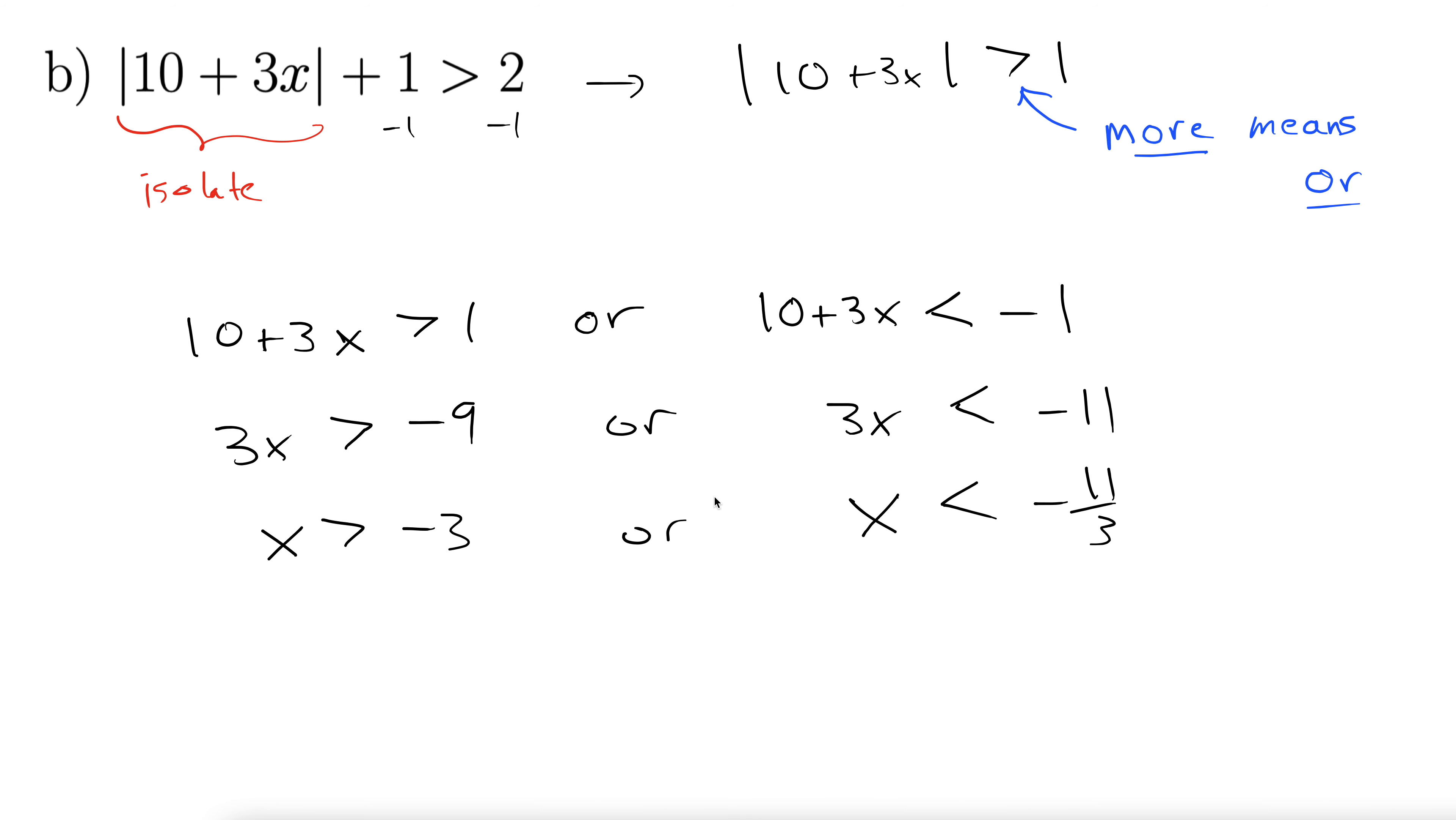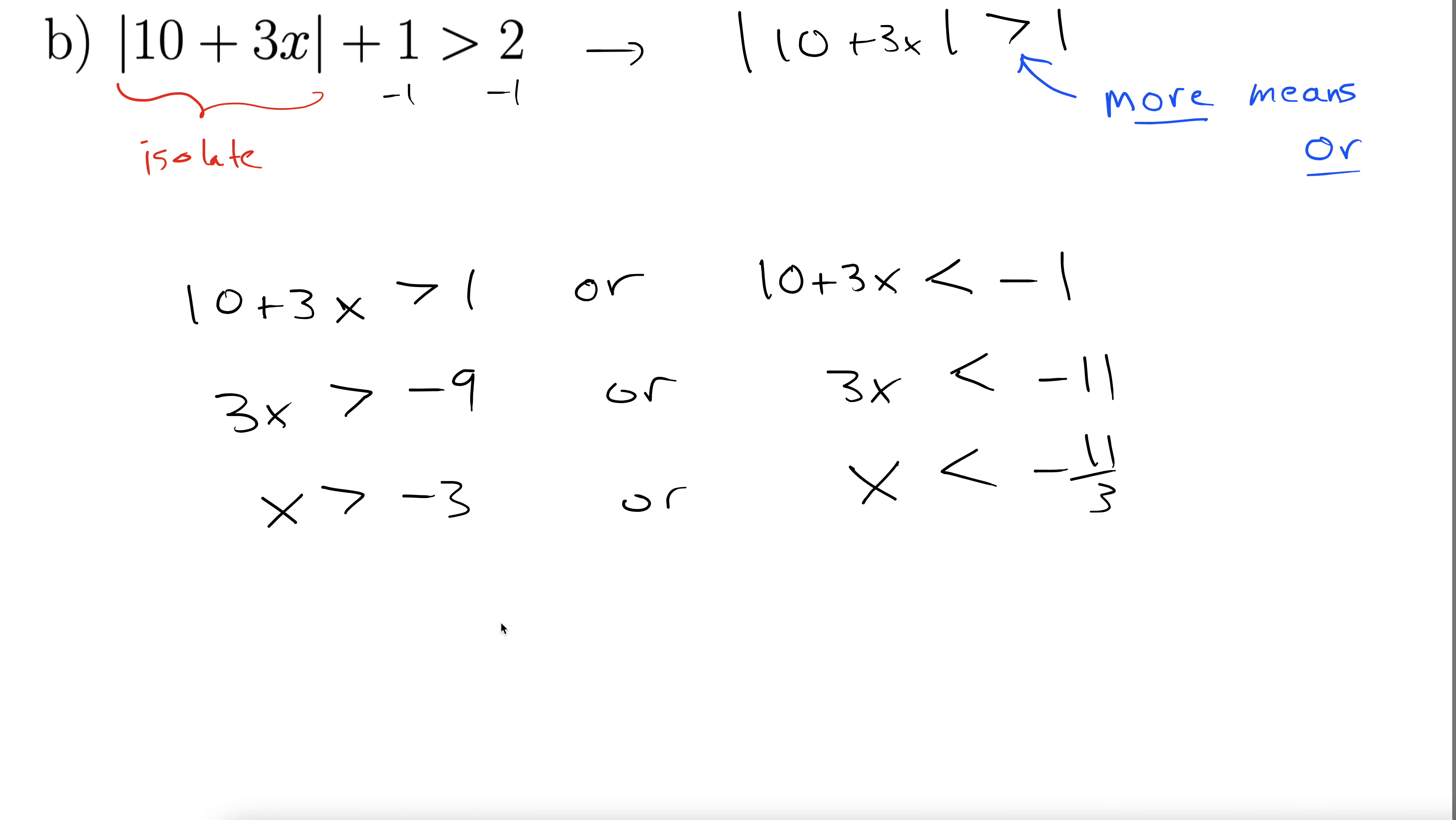Okay, where do we go from here? We graph. Let's do our graph notation. Okay, so negative 11 thirds. We need to know what that is. So this is the point where you would probably drop this into a calculator just to be on the safe side.